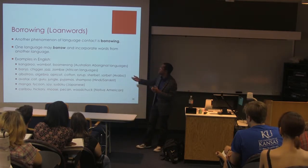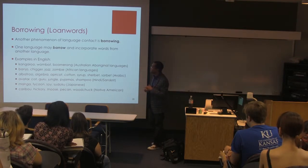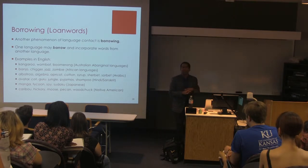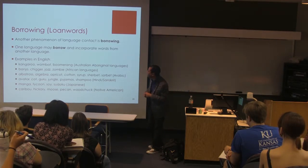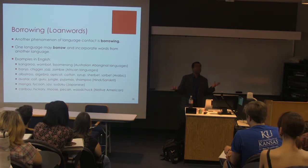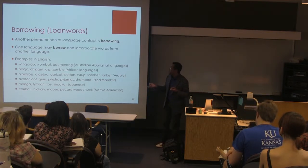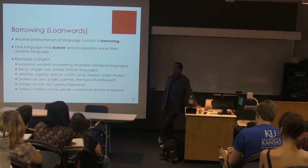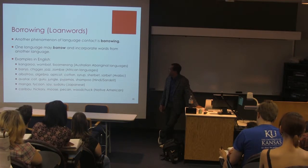Hindi and Sanskrit donated lots of words to English: avatar, guru, jungle, pajamas, shampoo — all of Hindi origin. But we don't think twice about them being Hindi; we just think they're English. From Japanese we get manga, tycoon, soy, and sudoku — I don't play the game very often; once you do one puzzle, they all become the same. And from Native American languages — and I'm being general here, not specifying Athabascan or Algonquian or Plains languages — we get words like caribou, hickory, moose, pecan, and woodchuck.